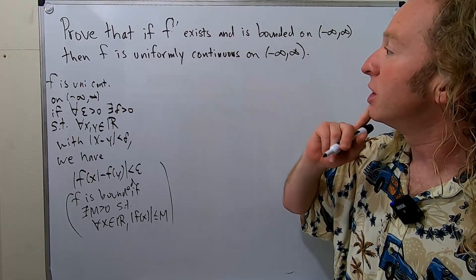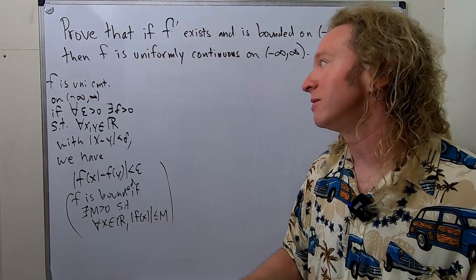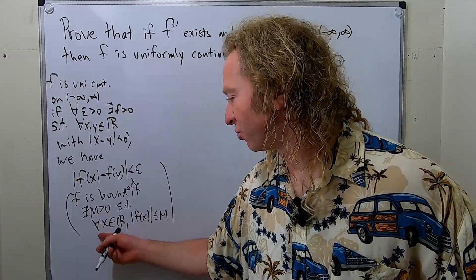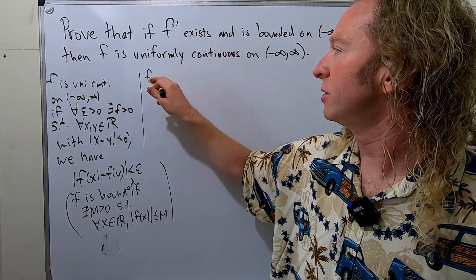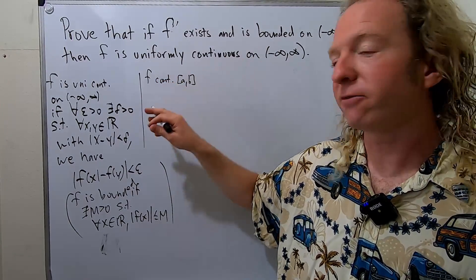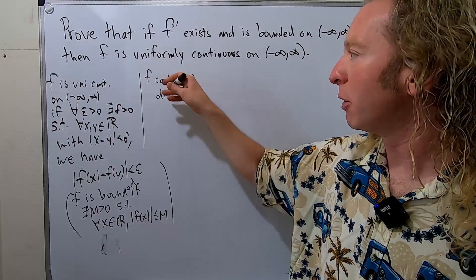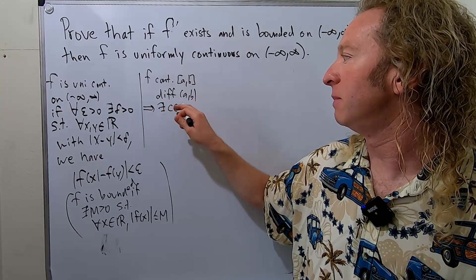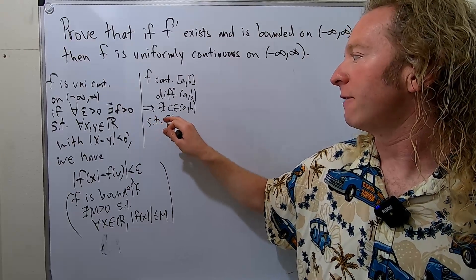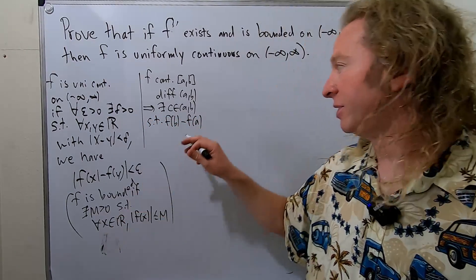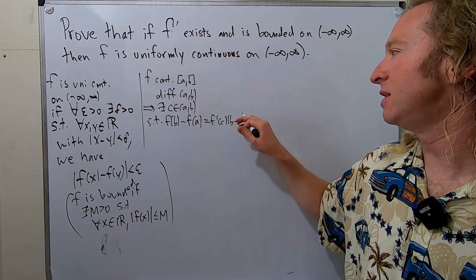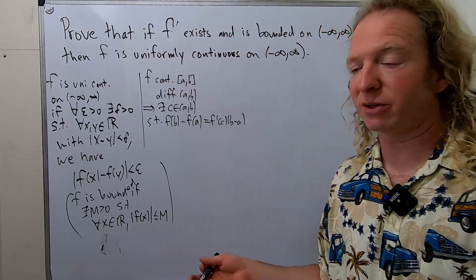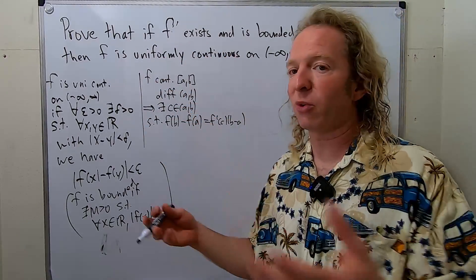So we have to prove that it's uniformly continuous, and to do that we're going to use the mean value theorem. The mean value theorem says that if you have a function that is continuous on [a, b] and differentiable on the open interval (a, b), then there exists a number c in (a, b) such that f(b) minus f(a) equals f′(c) times (b minus a). You have to know some calculus and the mean value theorem — otherwise it's game over.